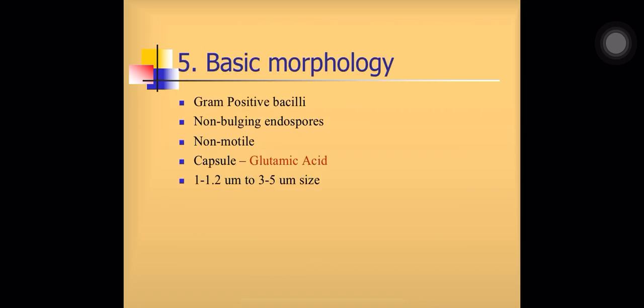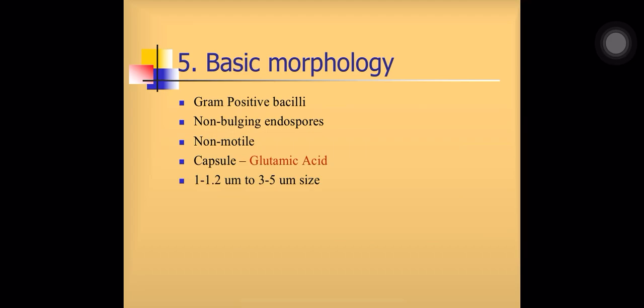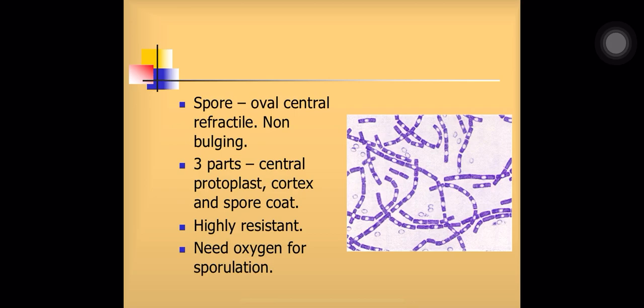The basic morphology of Bacillus anthracis: it is a gram-positive Bacillus with non-bulging endospores. It is non-motile and has a capsule made up of polypeptide. The Bacillus size is 1 to 5 micrometers. The capsule is polypeptide in nature and surrounds the entire chain of bacilli. This common polypeptide capsule can be seen when stained with methylene blue or Indian ink stain. The capsule protects the bacteria against phagocytosis. The spore is central and non-bulging.